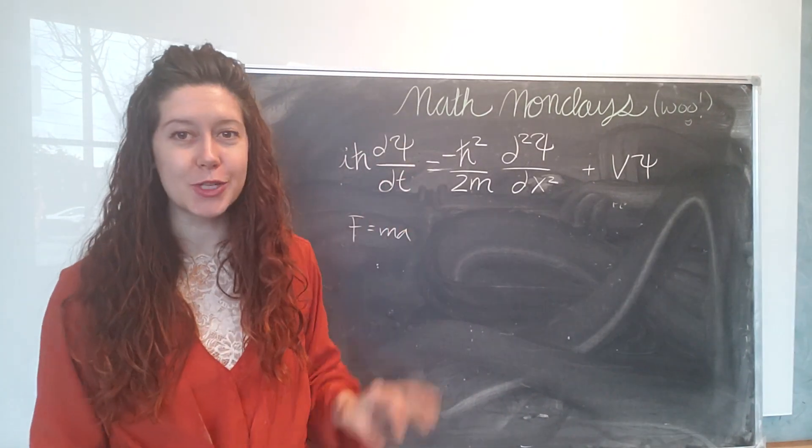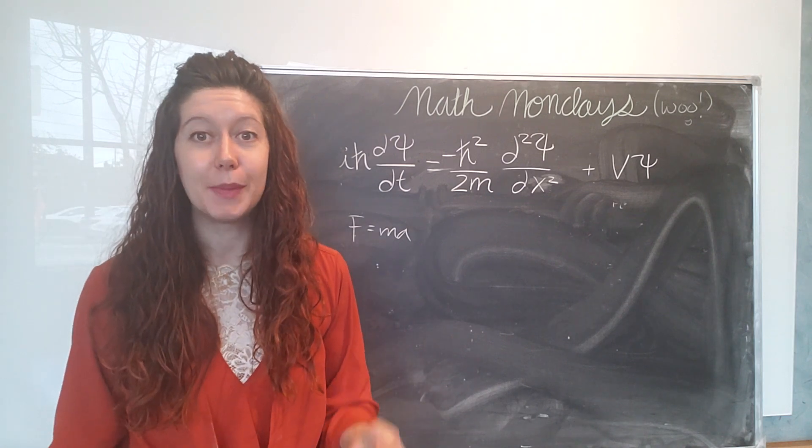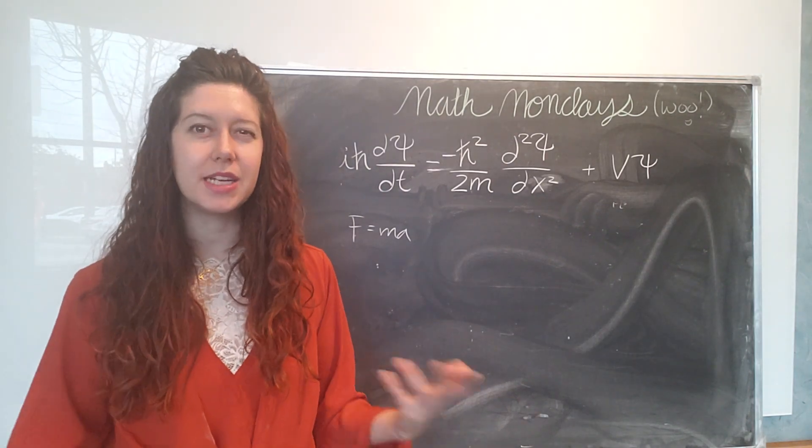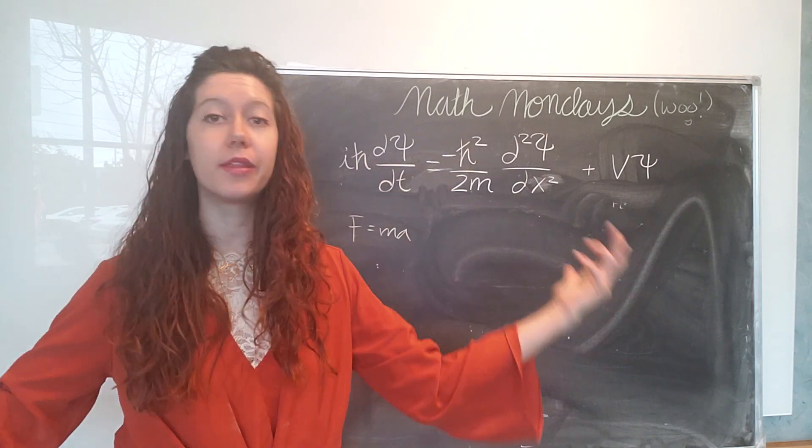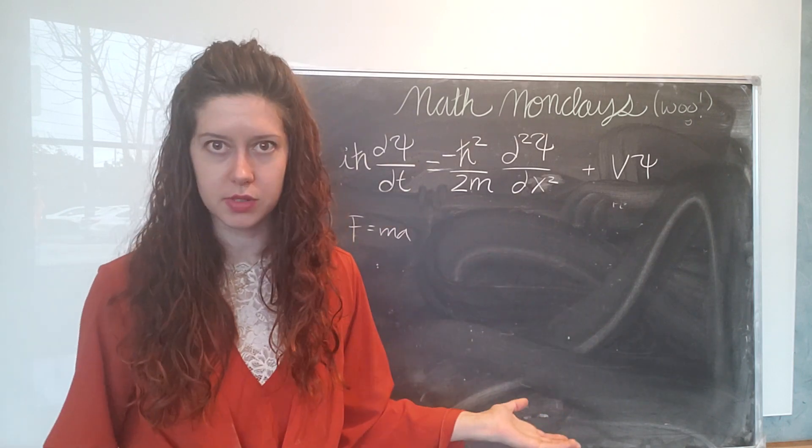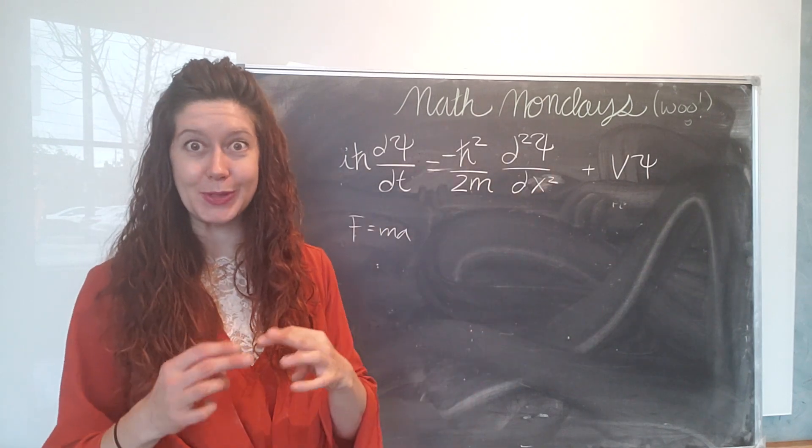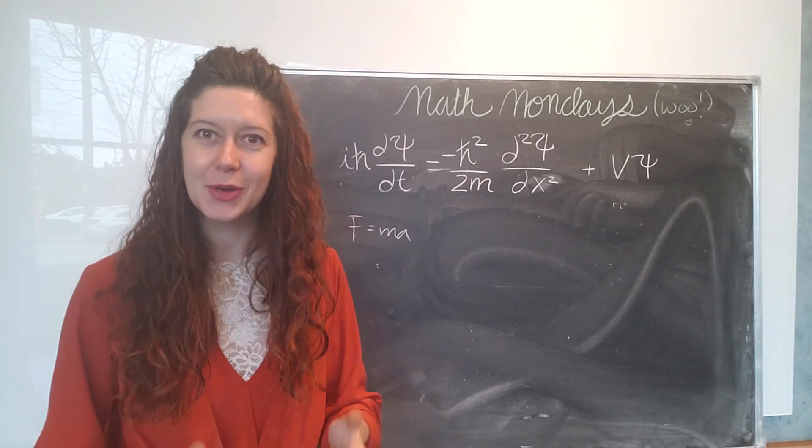So what Schrödinger's equation is is a way of making predictions about teeny, teeny, tiny particles of the quantum world. And those teeny, teeny, tiny particles make up all of the atoms in our body and actually everything that we can observe in the universe. And so if we want to make predictions about these teeny, tiny particles, we have to use Schrödinger's wave equation. Cool!